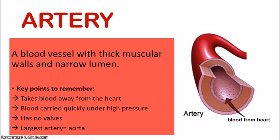Because of this high pressure blood, there's no need to have valves. Valves are only there to prevent backflow, and because the blood is moving quickly under high pressure, it's very unlikely that the blood is going to flow backwards — so no valves are in arteries. The largest artery in the body is the aorta, found on the left side of the heart, and it carries oxygen-rich blood to all areas of the body, all the different organs and tissues.